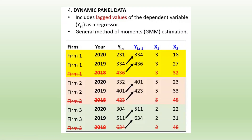We can also have dynamic panel data, which includes the lagged value of the dependent variable as a regressor. The dependent variable and its lagged value are both considered, and for this purpose we require generalized method of moments (GMM) estimation.